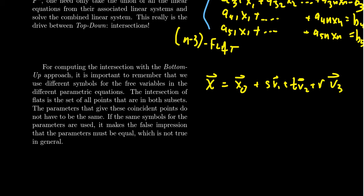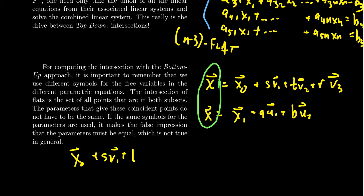And then we have another flat, which might be something like X equals some other vector X1 plus A*U1 plus B*U2. In which case, if we want to figure out what vectors belong to both of them, we can plug these things together and get X0 + S*V1 + T*V2 + R*V3 equals X1 + A*U1 + B*U2. So we have this vector equation, which we can translate into parametric equations. It's essentially a linear system in itself.